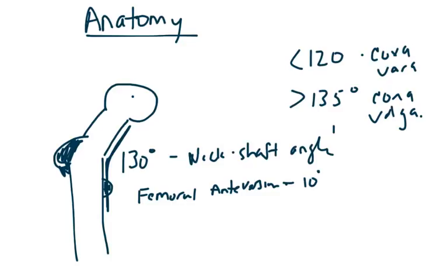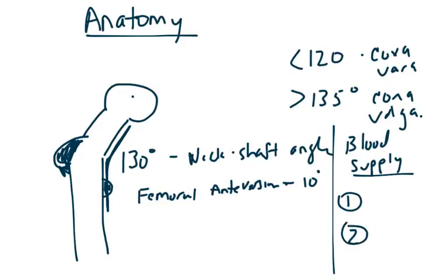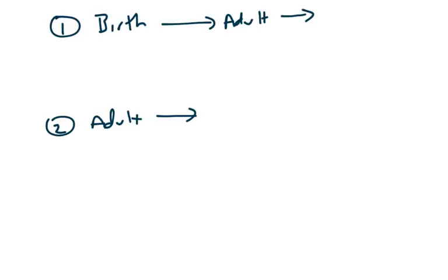When we talk about blood supply, we're going to break it down into two components. The first component is going to be from birth to our adult years. This is a little simplified, but we'll go with it. From birth to your adult years, you're going to have basically blood flow from three main sources: your medial femoral circumflex, your lateral femoral circumflex, and then a branch of your obturator artery.